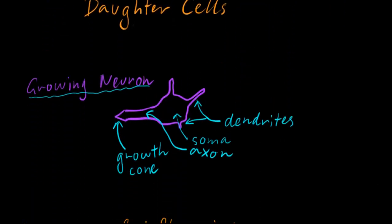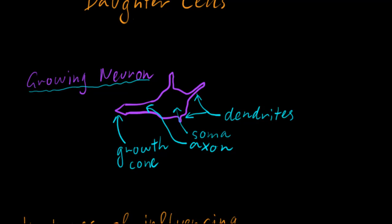So let's have a look at our growing neuron. As you can see, we've got an axon here which is growing, dendrites growing out as well, and obviously the soma. So this growth cone here, this is an enlargement here.